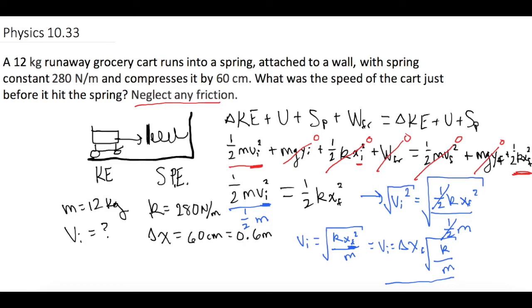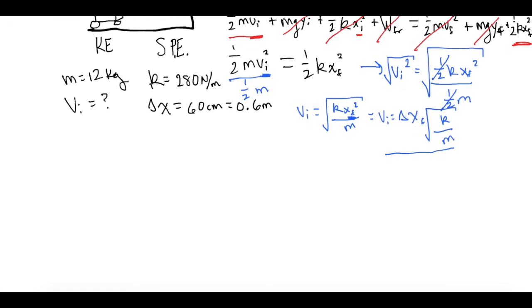So V initial equals delta X final, which they say is 0.6 meters times the square root of K, which is 280 newtons per meter divided by the mass, which is 12 kilograms. That gives us 2.898 meters per second, and then rounded for mastering physics gives us 2.9 meters per second. That's the final answer.